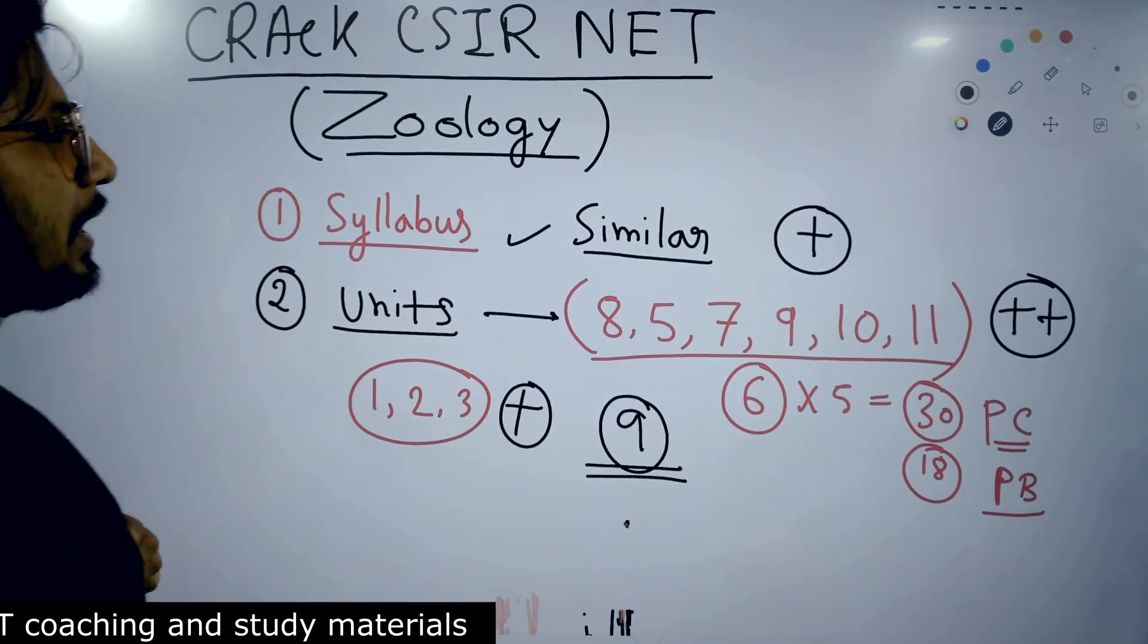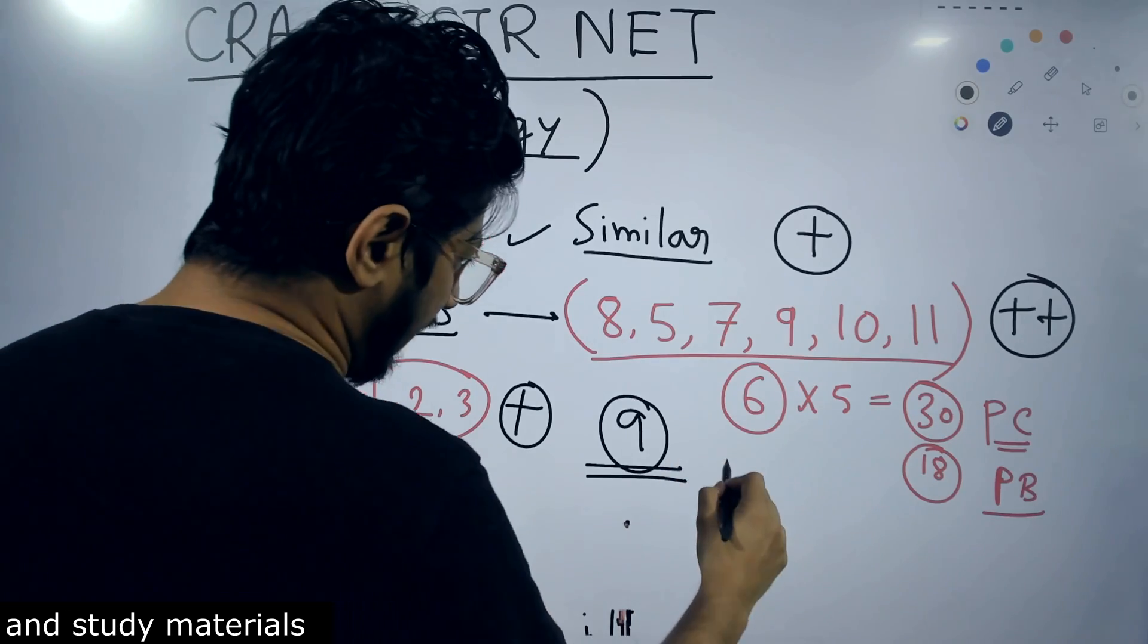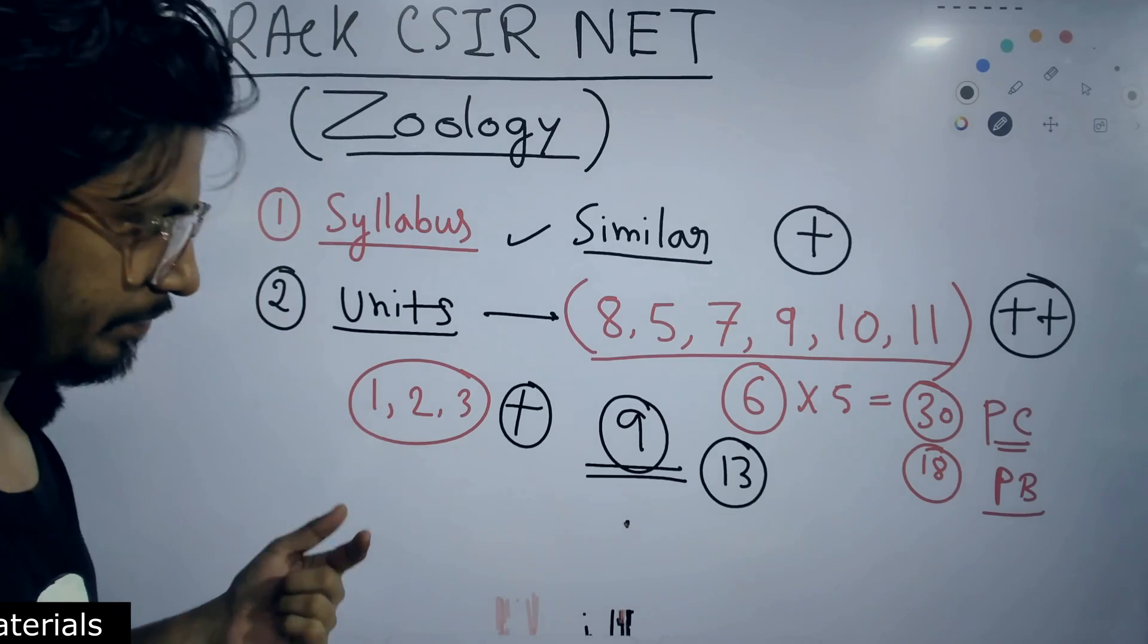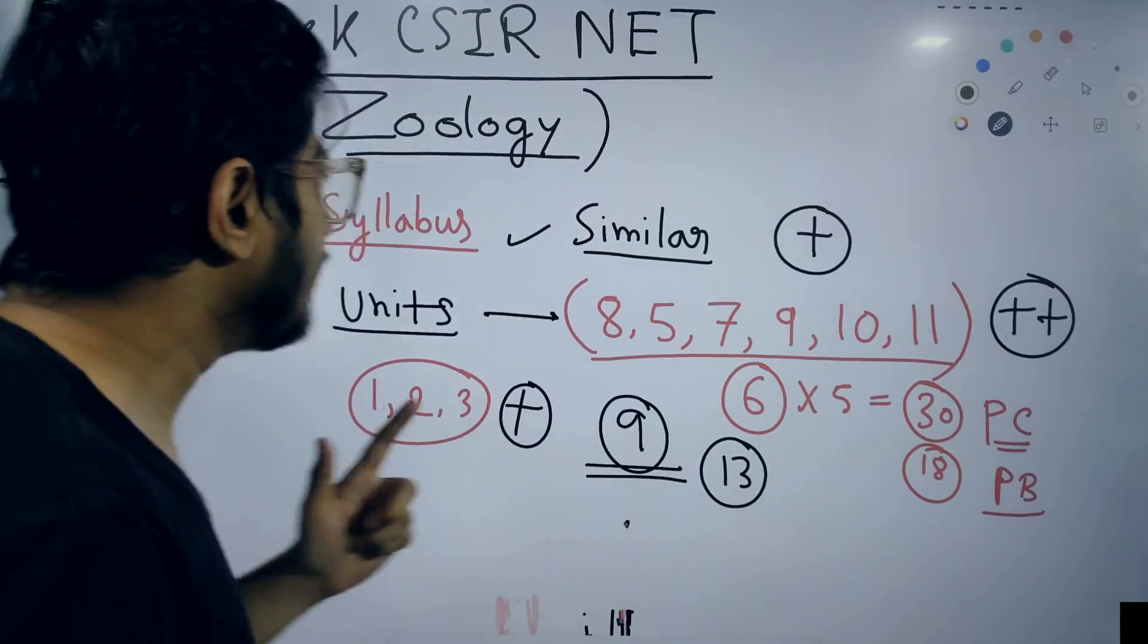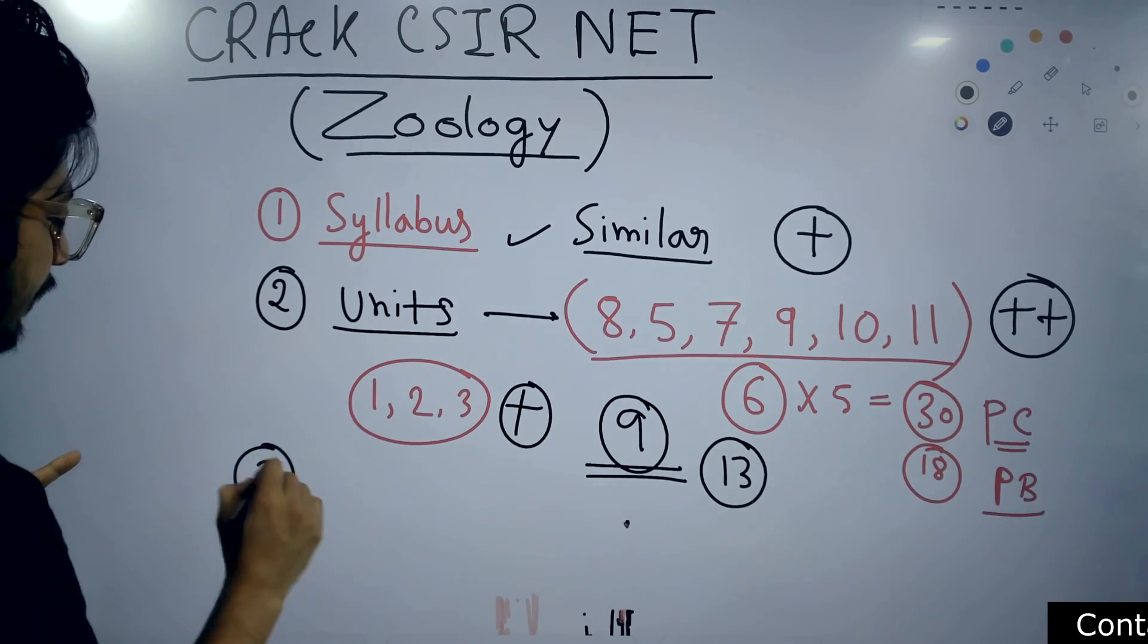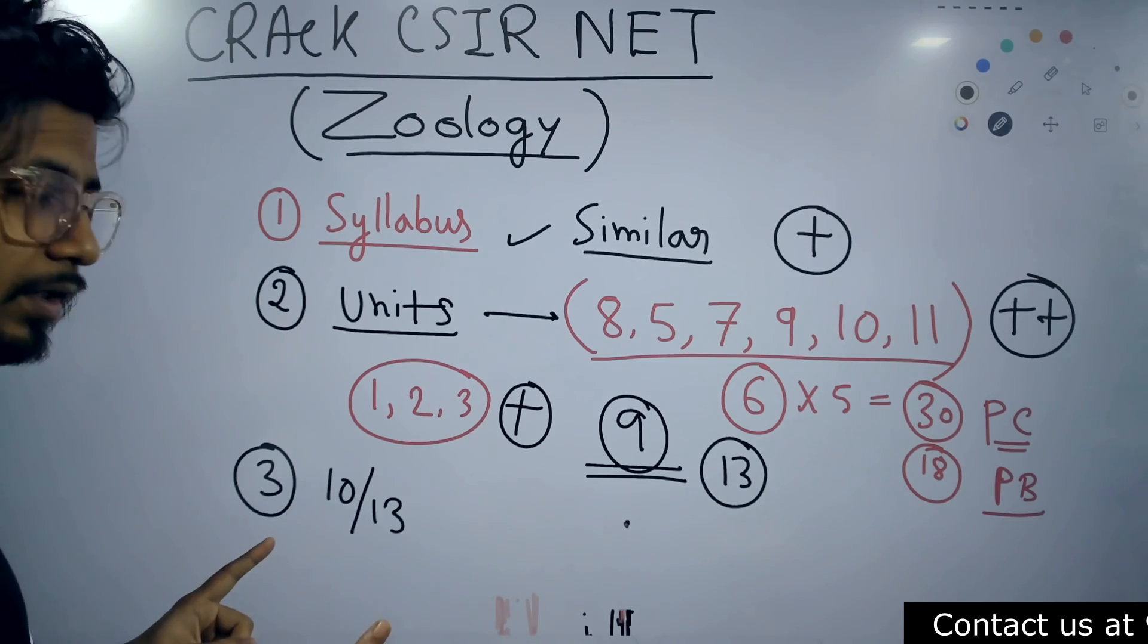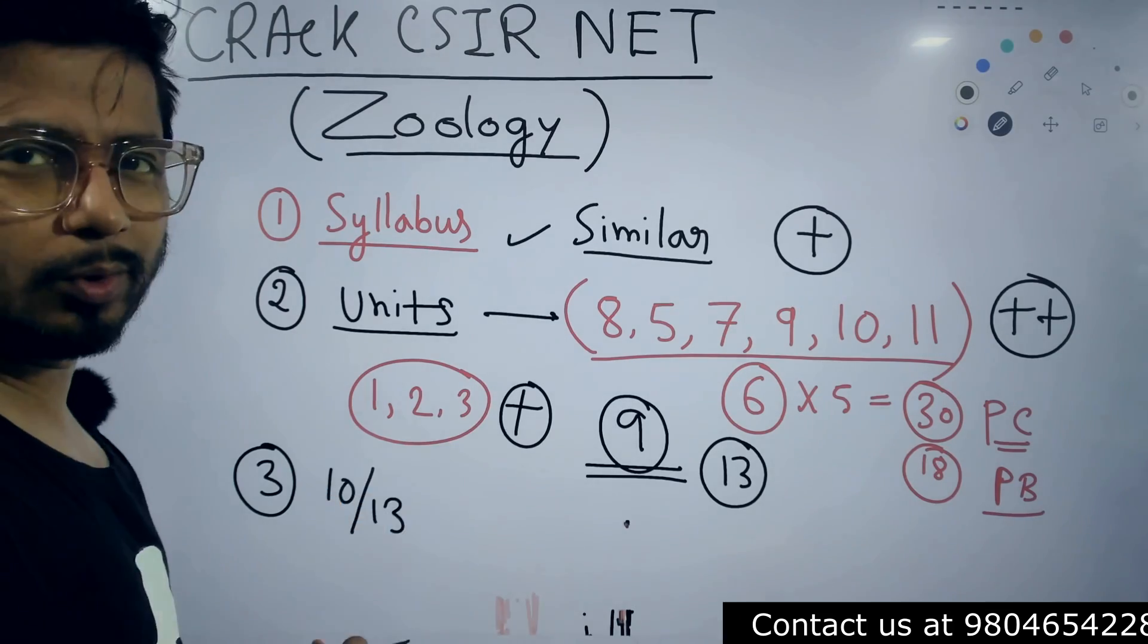If you have time after all these nine units, then I'll add one more unit, that is Unit number 13, which is biological techniques. You can add them and that will give you 10 units out of 13. Remember, this 10 out of 13 units that you prepare is good enough, sufficient enough for you to qualify the exam.